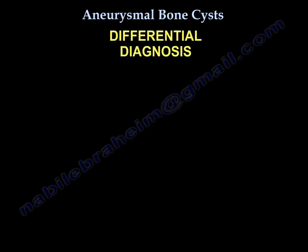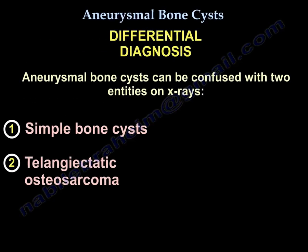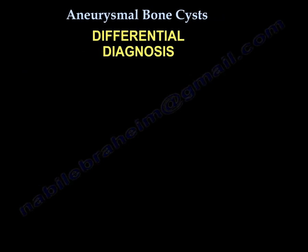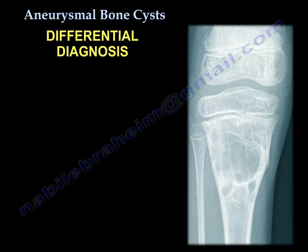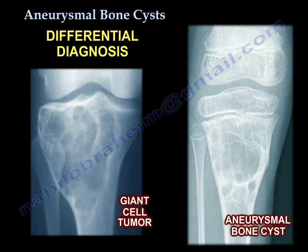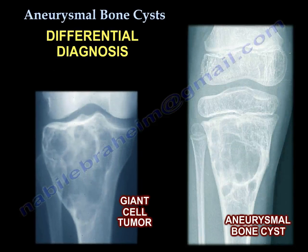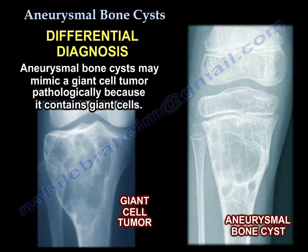Differential diagnosis: Aneurysmal bone cysts can be confused with two entities on x-rays. Number one, a simple bone cyst. Number two, telangiectatic osteosarcoma. Another differential diagnosis is giant cell tumor. Aneurysmal bone cysts may mimic giant cell tumor pathologically because it contains giant cells.